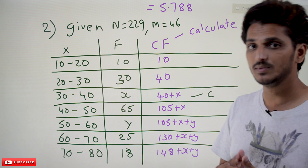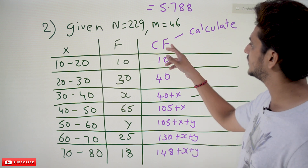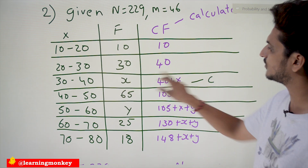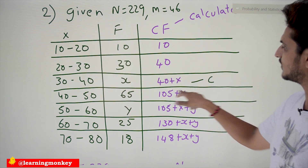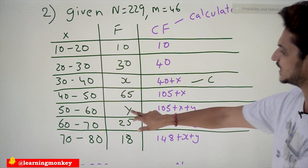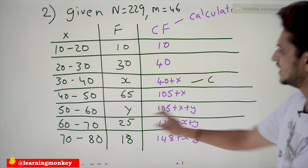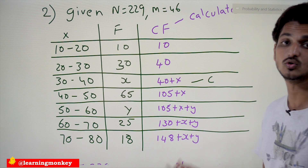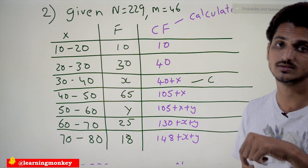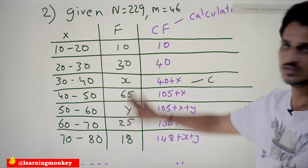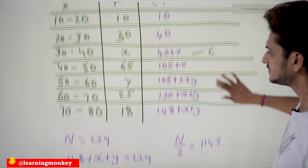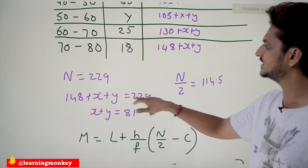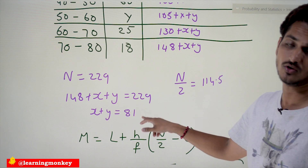To find the cumulative frequency: 10, then 10+30=40, then 40+X, then 40+X+65=105+X, then 105+X+Y, then 105+X+Y+25=130+X+Y. The total cumulative frequency equals N = 229. So 148 + X + Y = 229, which gives us X + Y = 81.